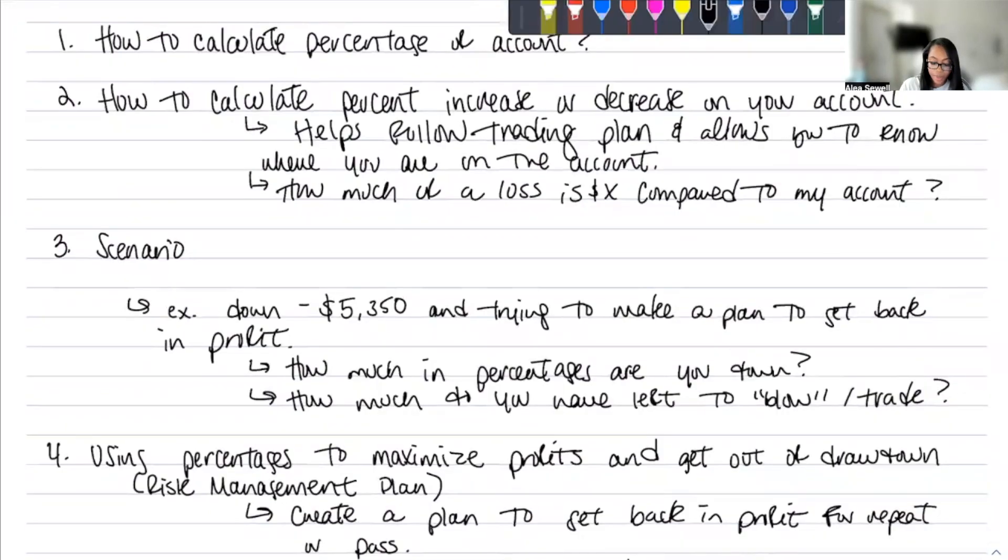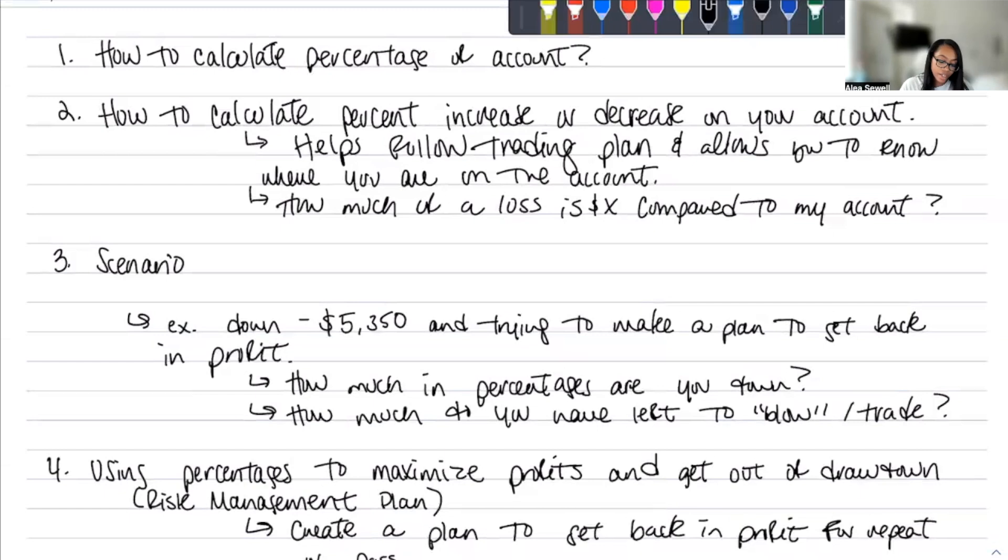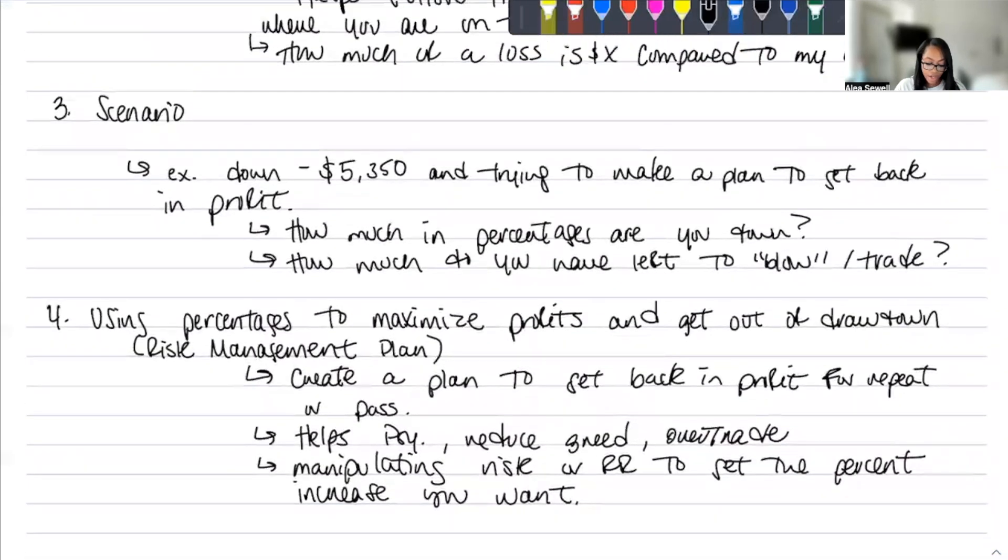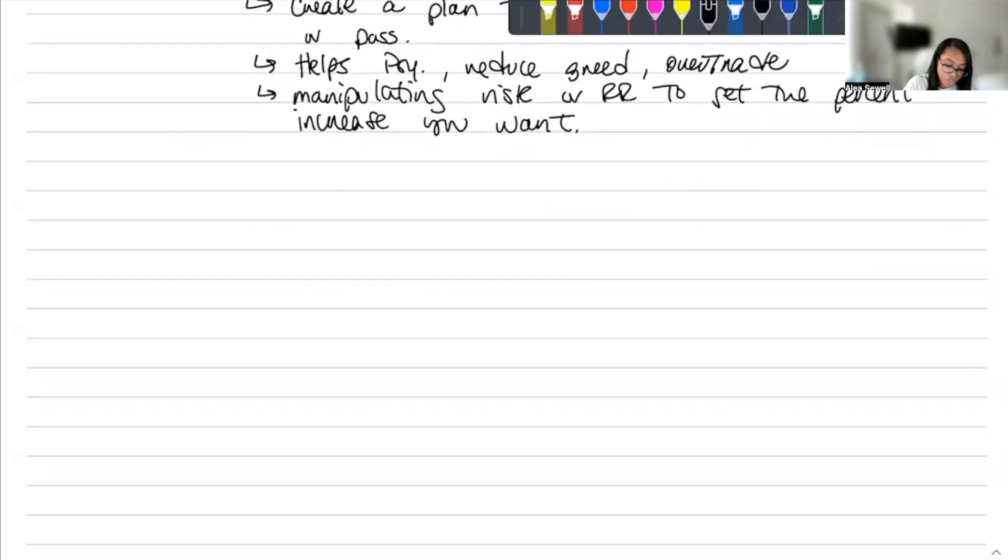So these are the topics we're going to be talking about today. How to calculate the percent of the account, how to calculate the percent increase or decrease on your account. We're going to do a scenario, and then we're going to be using percentages to maximize profits and get out of drawdown, make a risk management plan.